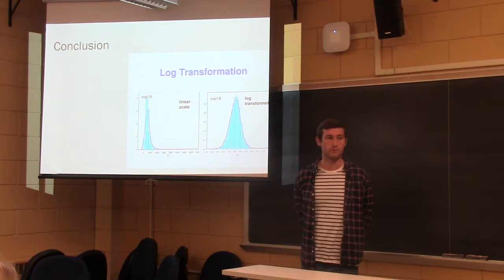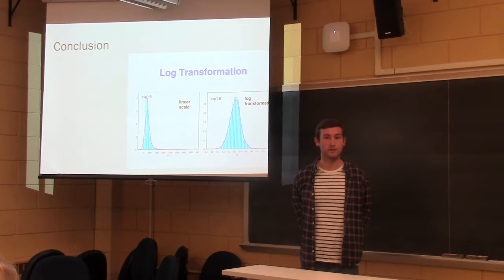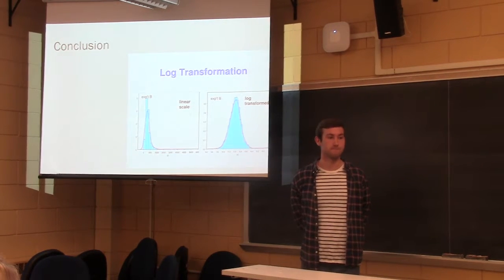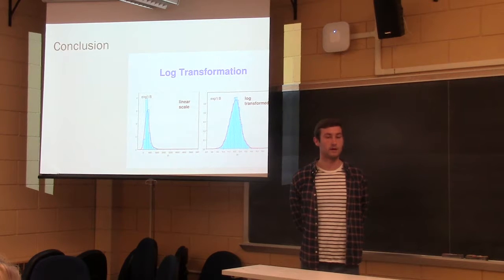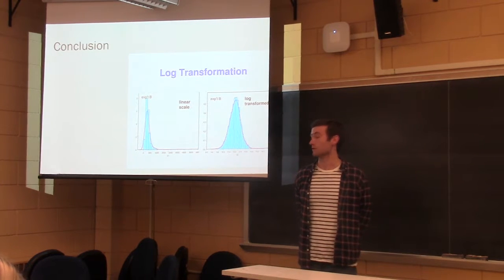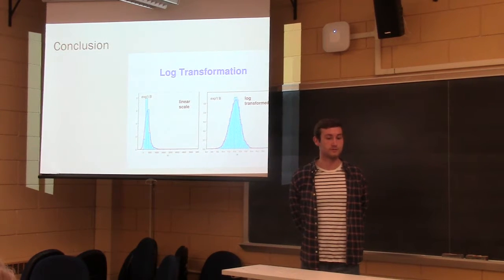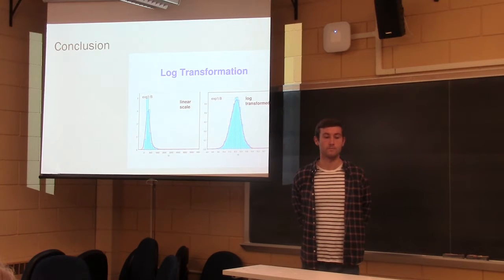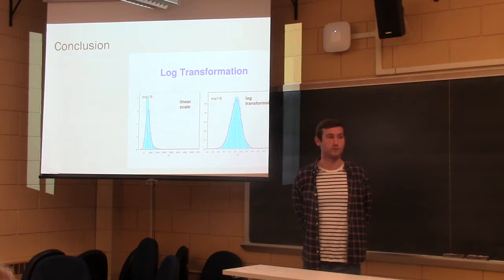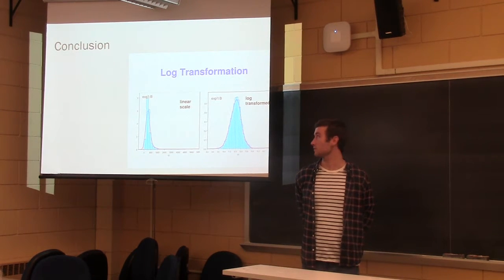So in conclusion, you need to use variable transformations to normalize data. And there's a few different methods for doing that, like Bulging Rule, Tukey's Ladder of Powers, and the Box-Cox method. So in order to get the assumptions you need for linear regression, you need to transform variables when there exists non-normality. And that's it.